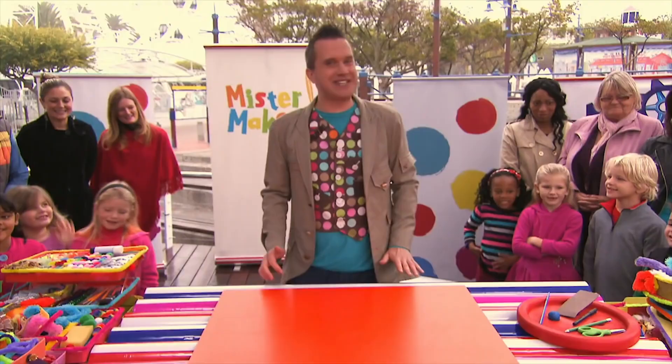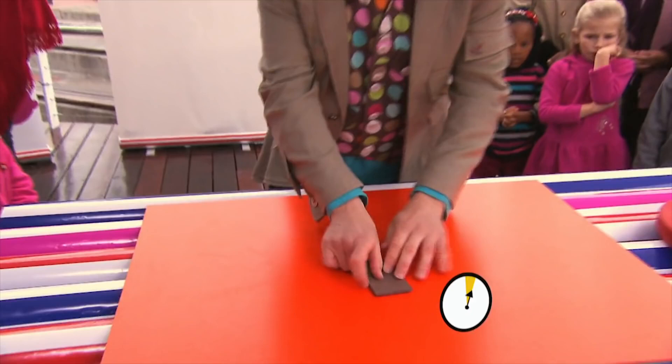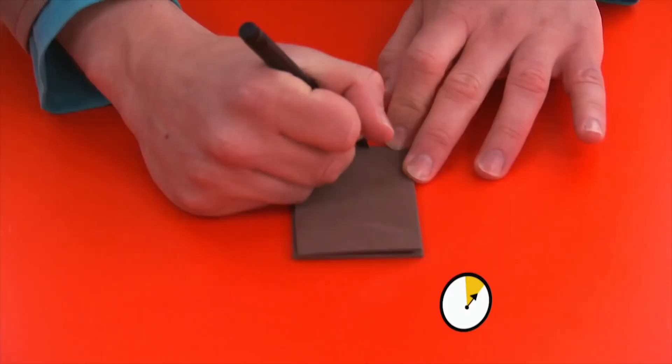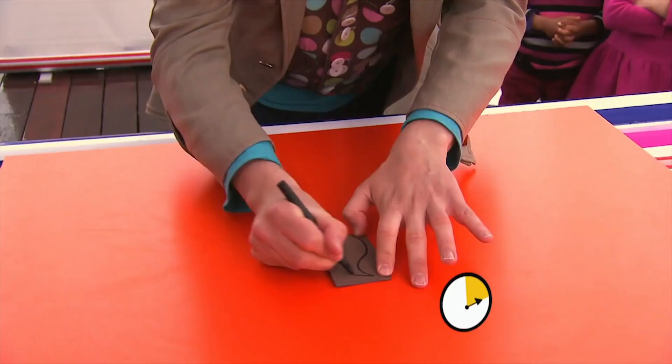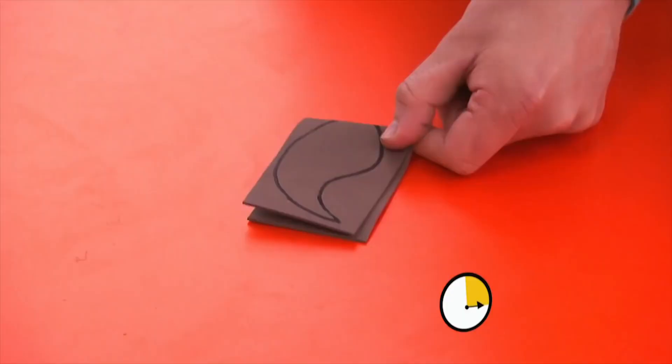Right, the first thing we're going to do is fold our piece of fun foam in half, and then we're going to draw on a teardrop shape, starting at the folded edge like that. Round and round it goes. And then we're going to cut out that teardrop shape starting at the folded edge.